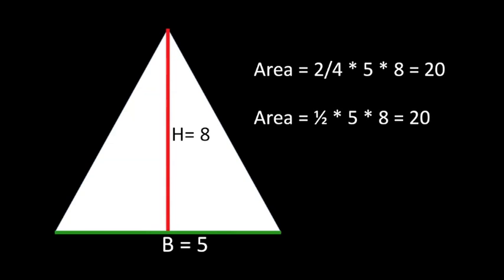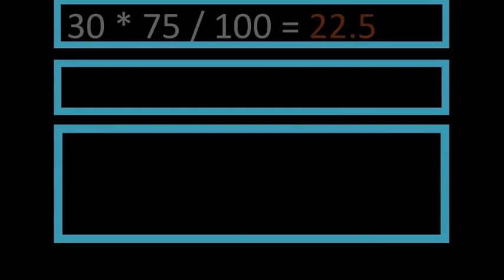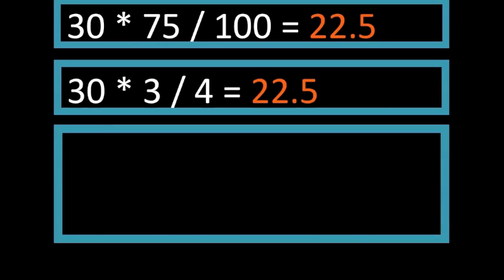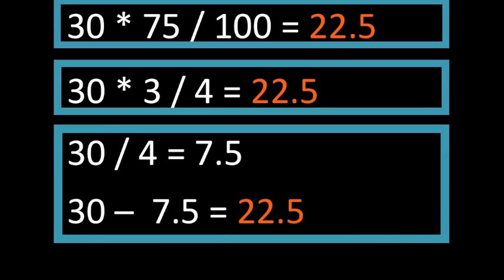Or let's say you're trying to calculate what 75% of 30 is. Some people will multiply 30 by 75 and then divide by 100. Or others may multiply by 3 and divide by 4. Or you could divide 30 by 4 and then subtract the result from 30. All these methods will yield the same result.